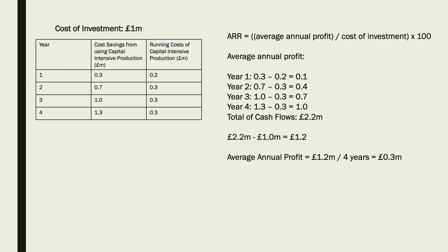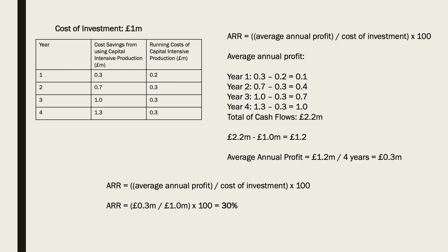So now we've got our total profits, but we need to make it our average annual — our average yearly — profit. So we take the £1.2 million and divide it by four, four years, because we saw four years in the table there. That comes to £0.3 million as the average annual profit, which is the top of the formula. Then we plug that into the formula: 0.3 million divided by 1 million times by 100 equals 30%. And 30% is the ARR.